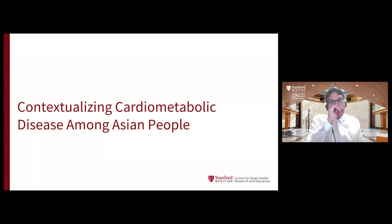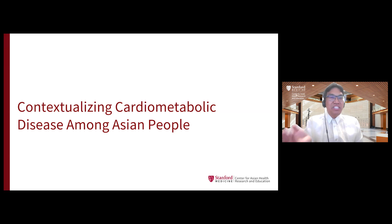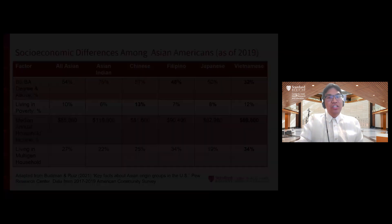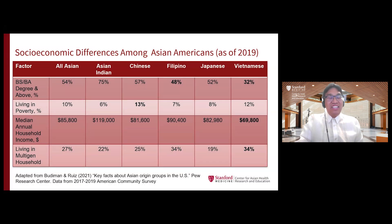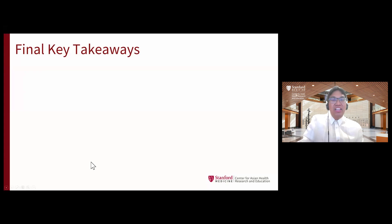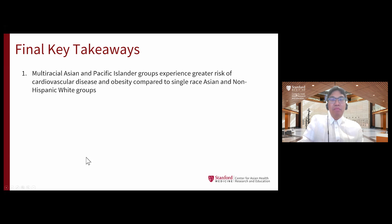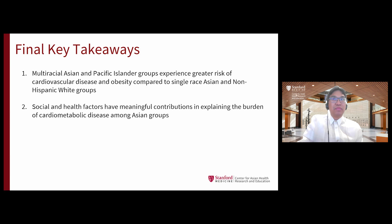One way we can think about this is by contextualizing cardiometabolic disease among Asian people, specifically looking at individual-level contributors. Similar to how we think about the heterogeneity within cardiometabolic disease, we know there are a lot of differences with respect to Asian groups based on socioeconomic status. First, multiracial Asian Pacific Islander groups experience increased risk of cardiovascular disease and obesity compared to single-race Asian and non-Hispanic white groups. Second, social and health factors have a meaningful contribution in explaining the burden of cardiometabolic disease among Asian groups.